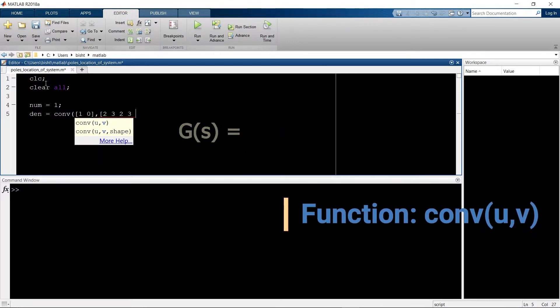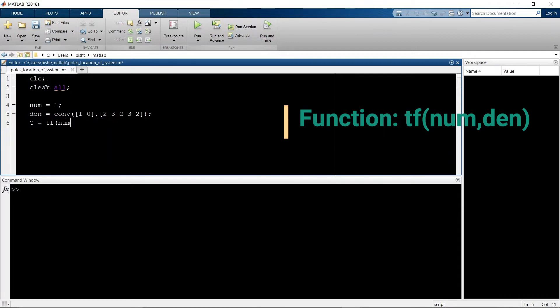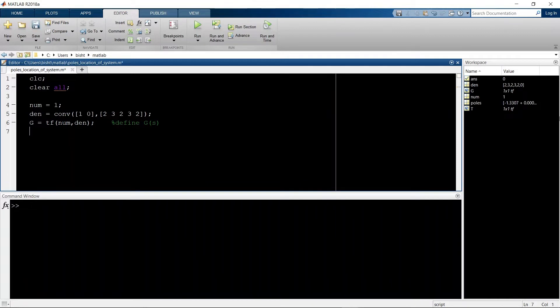Now we use the tf function to create our gain transfer function. To check if our gain is correct, run the script. Here you can see the gain function.